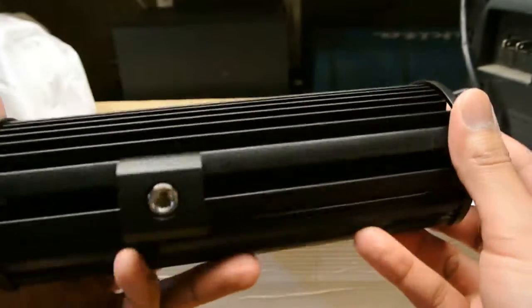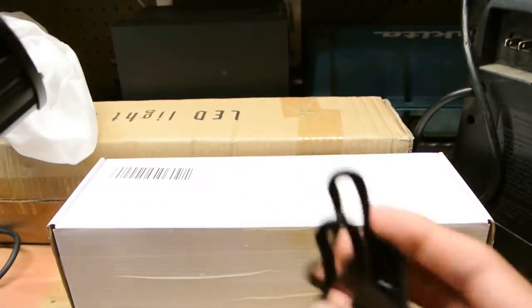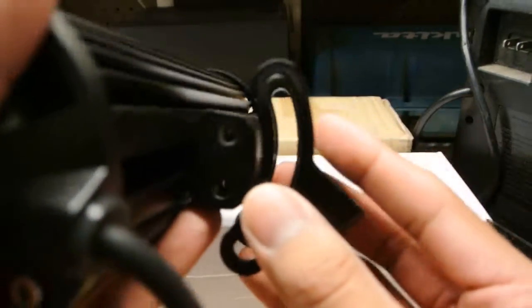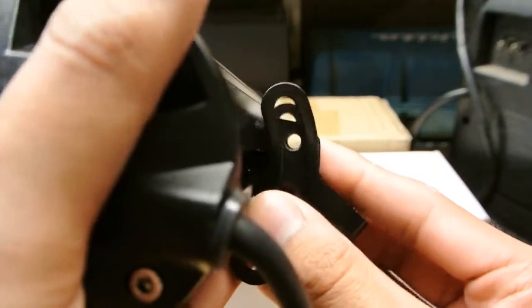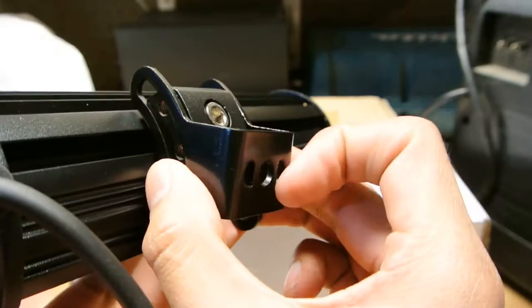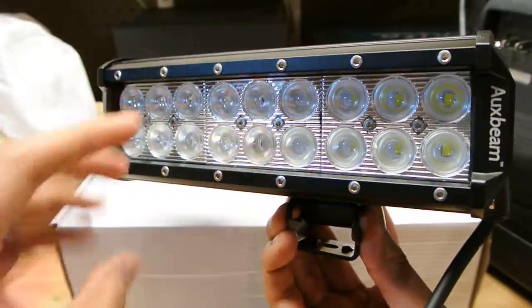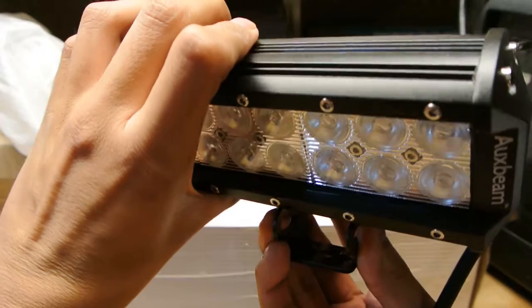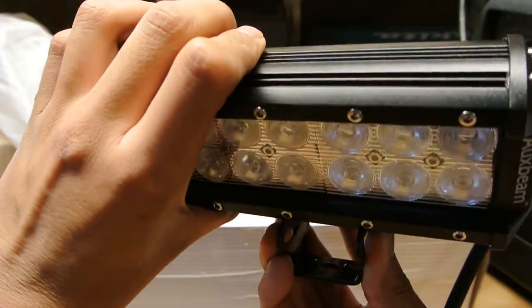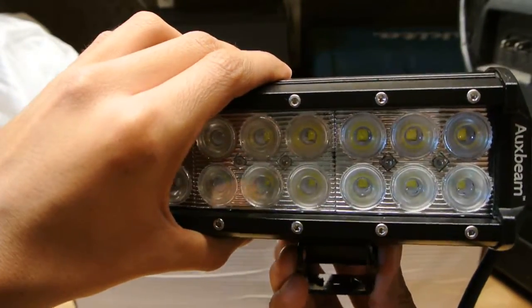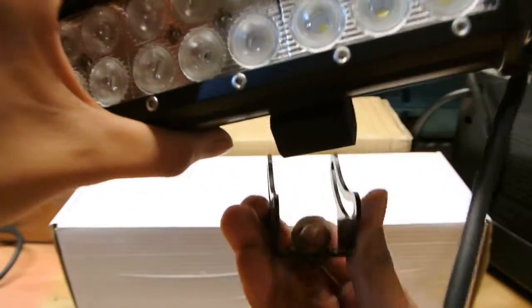This particular model mounts on the bottom here with the supplied hardware. Simply put the bracket here, screw it on with the screws that are provided and mount it wherever you are looking to mount it. So it does articulate, it is adjustable down and up. And then you can do it side to side depending on how you mount it.